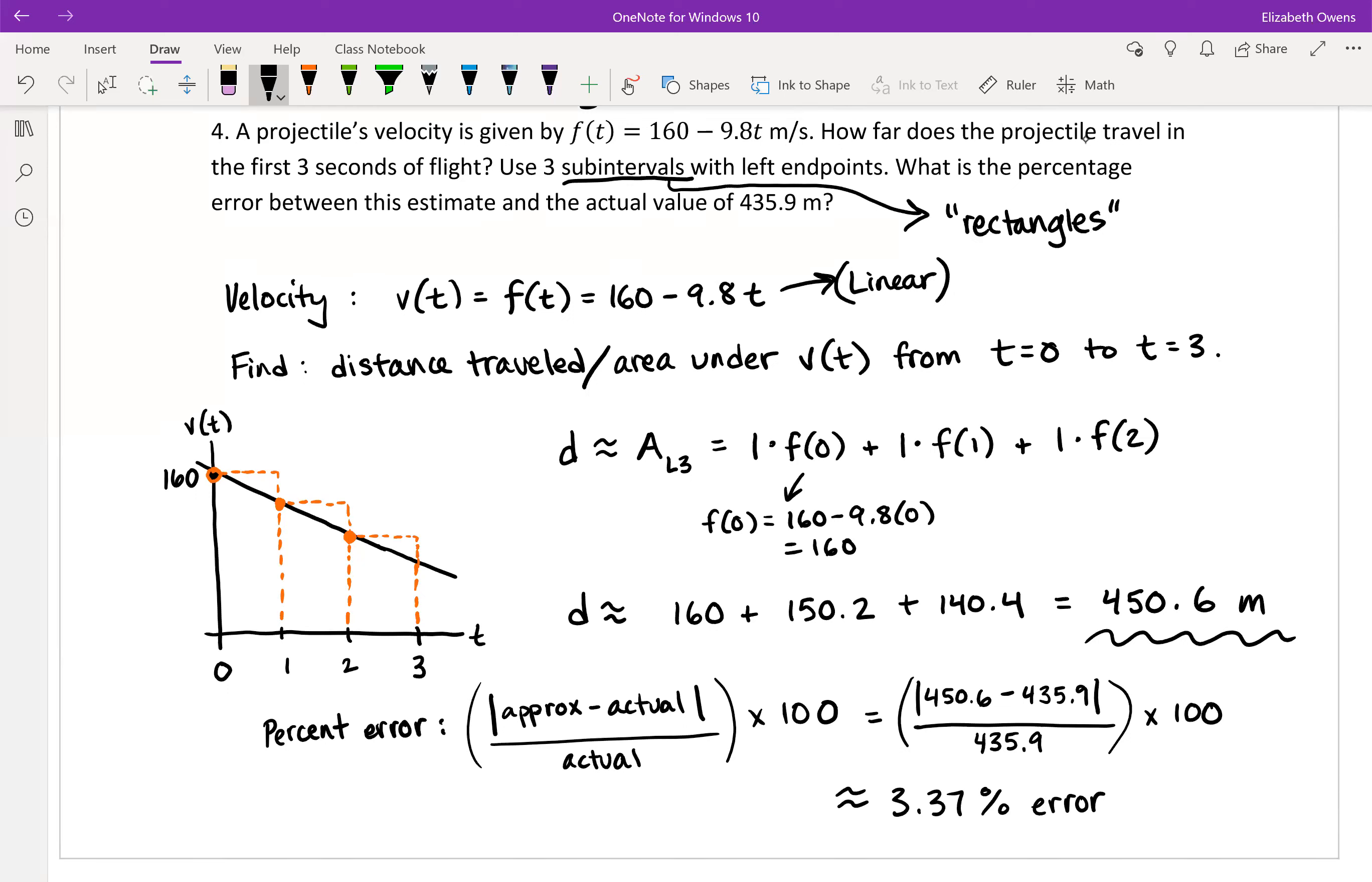So yeah, overall, not too bad. We can see that we did definitely overestimate by using those particular three rectangles with the left endpoints. That was an overestimate, but only by 3.37%, not too bad. Okay, so that wraps up section 5.1. Okay. Thank you.